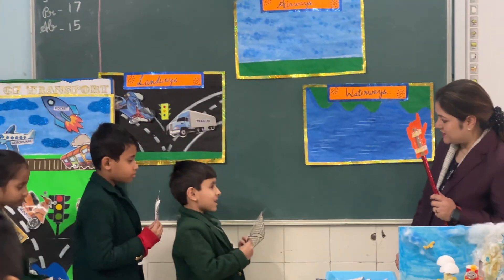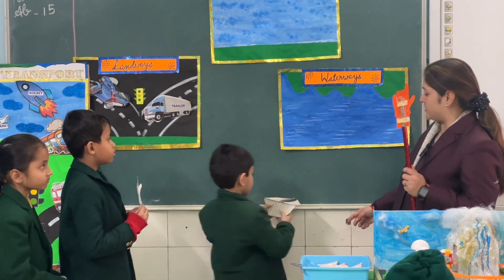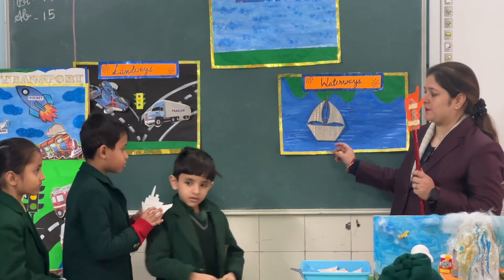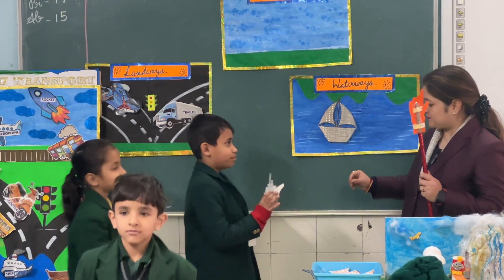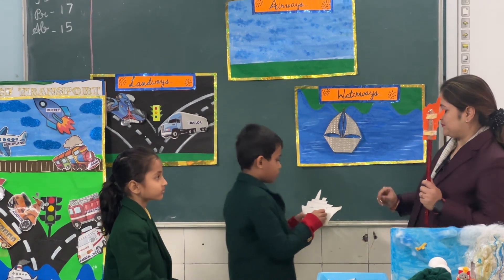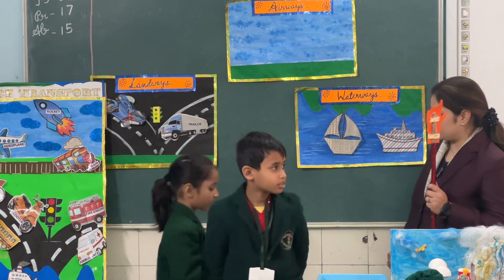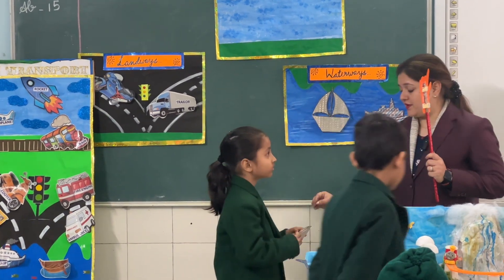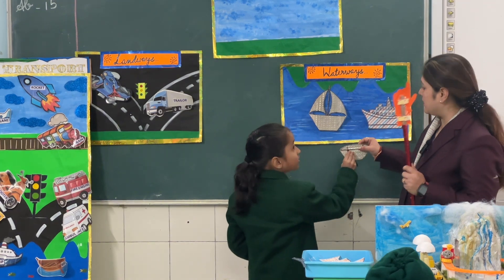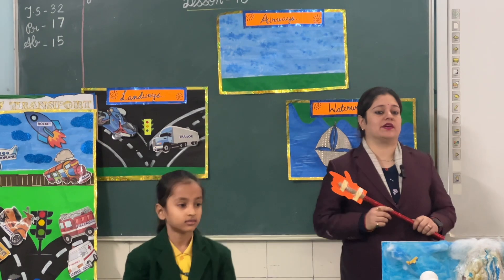What did you get? Land transport. Where are you going to paste it? Water. Water. Good. Next. Ship. It's what you got? Land transport. Boat. So it's a part of which transport? Water. I want two more volunteers.